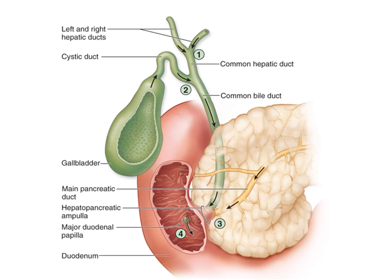The common bile duct crosses the posterior superior surface of the head of the pancreas, or is embedded in its substance. The pancreatic and bile ducts unite to form a short dilated hepatopancreatic ampulla, which opens in the descending part of the duodenum at the summit of the major duodenal papilla.